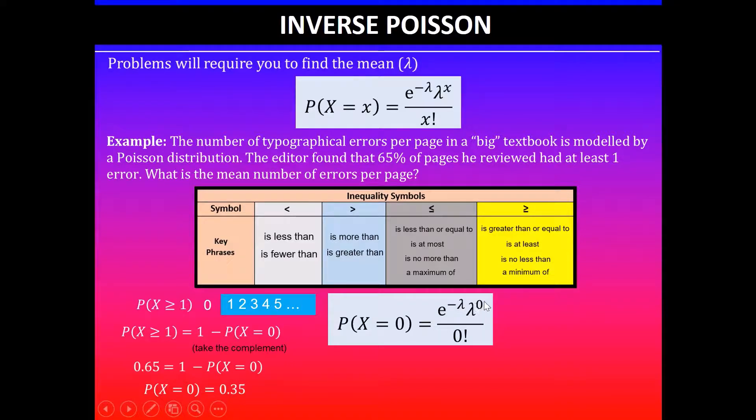Divided by x factorial, and x is zero in this case as well. Please remember anything raised to the power of zero is one, and zero factorial is one, so they will cancel out. That simplifies to 0.35.